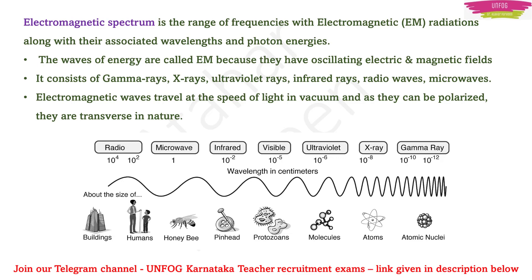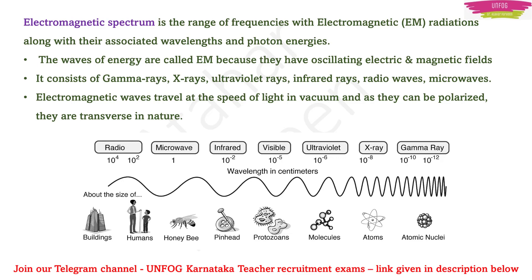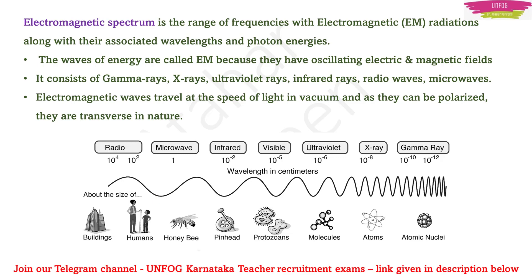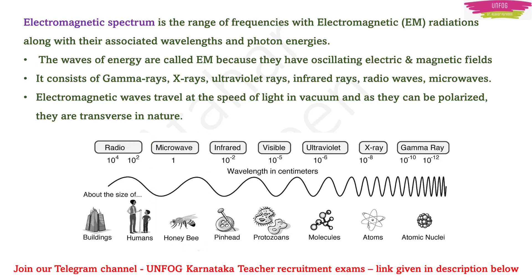Here it is clearly depicted how the radio waves wavelength ranges — it ranges from 10 to 200 centimeters, meaning the radio wave wavelength can be the size of a building or the size of a human. Coming to microwaves, their size is around 1 centimeter, which is about the size of a honeybee.